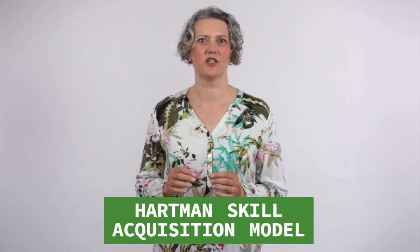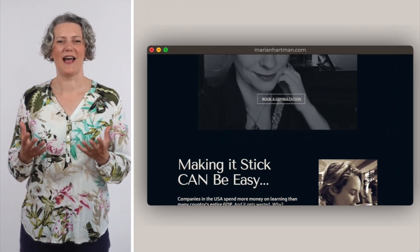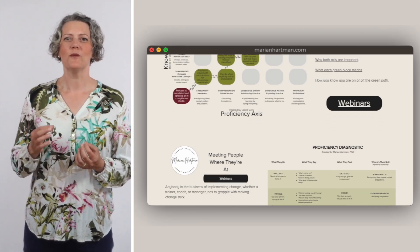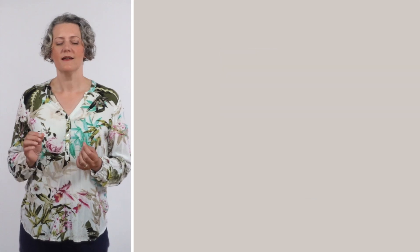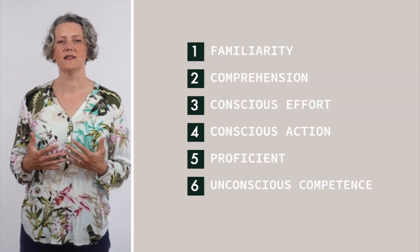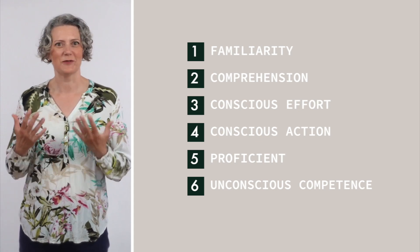I'm going to show the Rubik's Cube analogy to explain the Hartman skill acquisition model. I met Marian Hartman recently, and learning about her model was an actual light bulb moment for me — it basically explains why Saman Coaching works. Hartman's model has six stages and it applies to any practical skill like TDD, refactoring, or solving a Rubik's Cube. We're going to go through the stages.